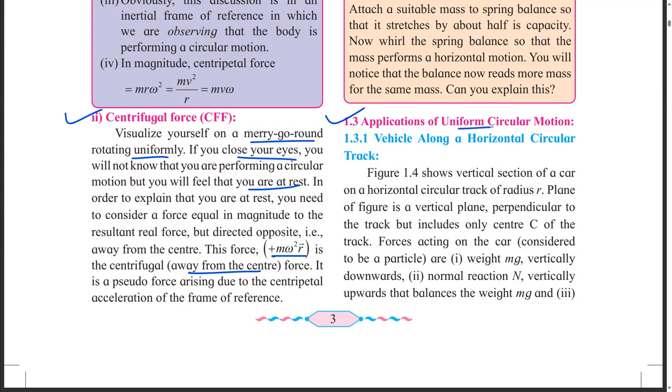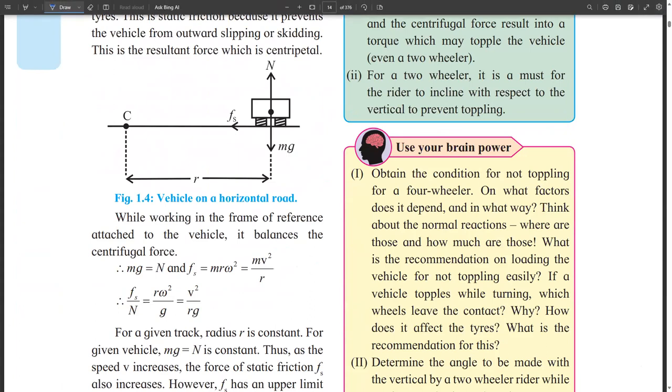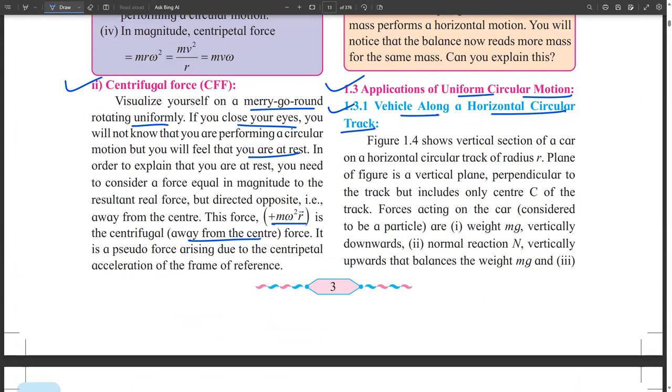Then applications of uniform circular motion. Where is this uniform circular motion applied? First is vehicle along the horizontal circular track. They have given one figure, figure 1.4. Have you seen this? Could you explain this? Just first we read the theory so the idea will be clear. Okay. They have given one figure. In that they have shown one car which is on the horizontal circular track of radius R. And plane of that figure is a vertical plane, which is perpendicular to the track, that includes only the center.